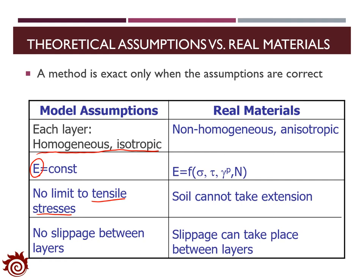However, for the real materials, usually for each layer, the property of the material is not homogeneous and isotropic. In addition, the modulus of elasticity in reality is a function of the stress, strain, and force applied to the layer. At most cases, the soil cannot take extension, which means there will be some limitations about the tensile stresses. Finally, for two layers, slippage can happen between them.